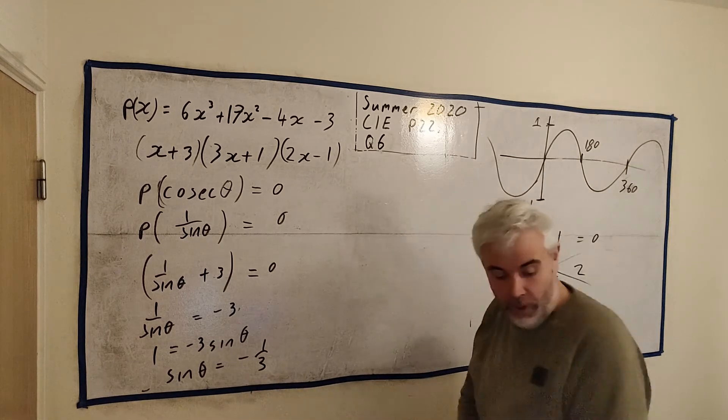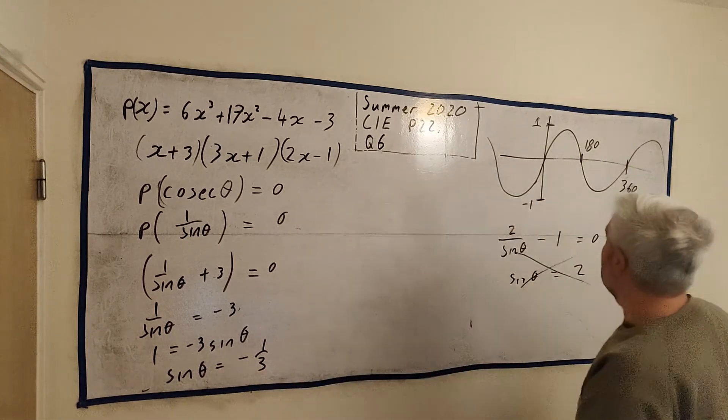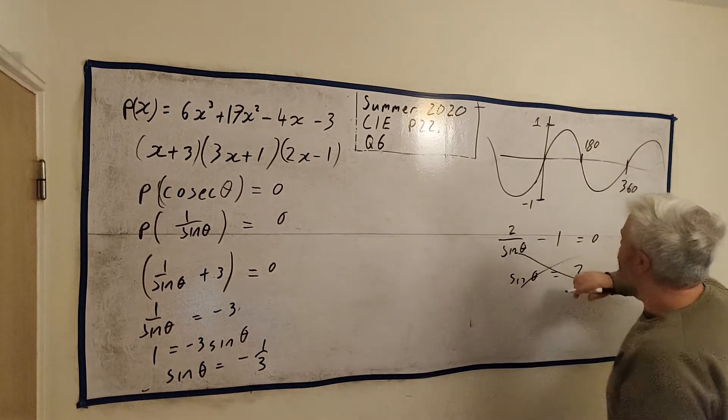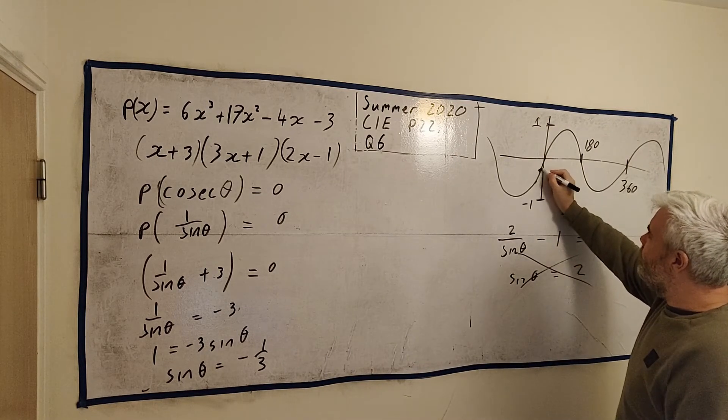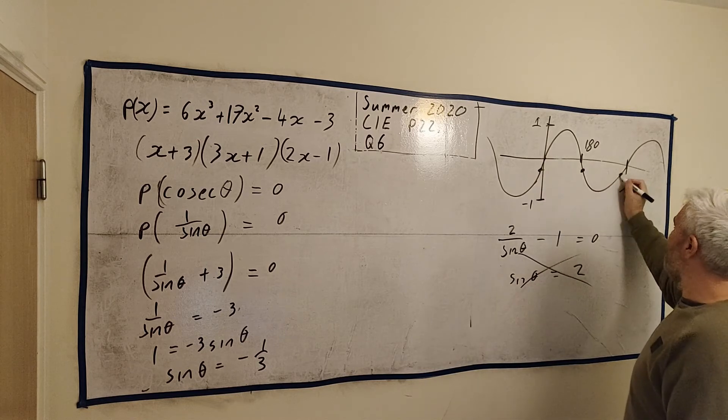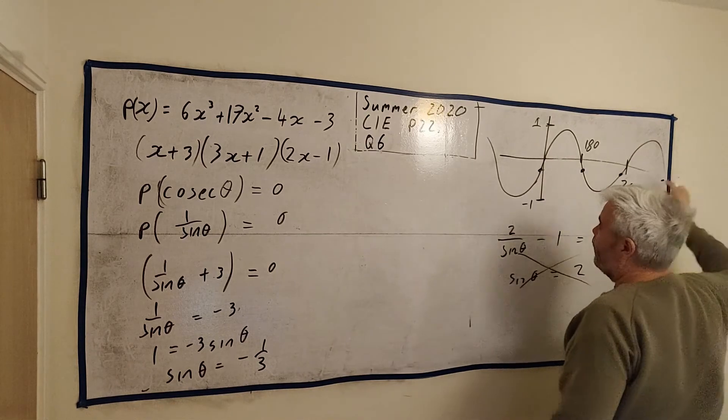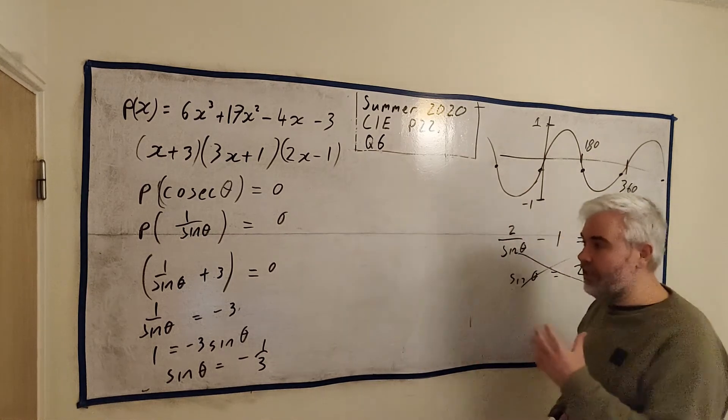Sin theta is equal to minus 1 third. So here's minus 1 third about here. So here's one answer. Here's another answer. Here's another answer. There's more answers over here. And it continues on forever. There's infinite answers.